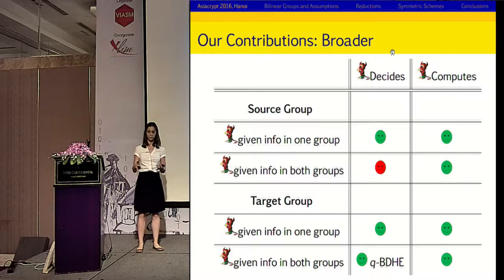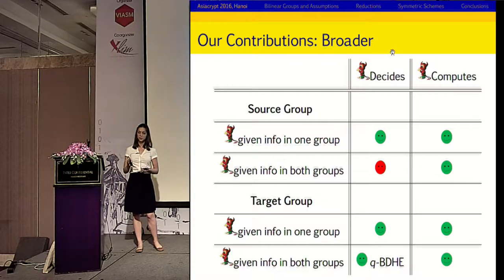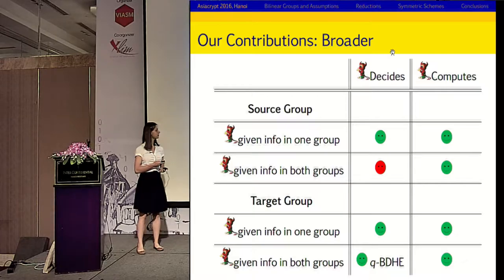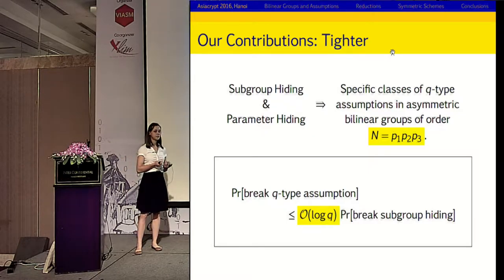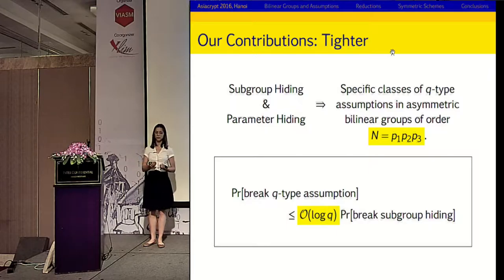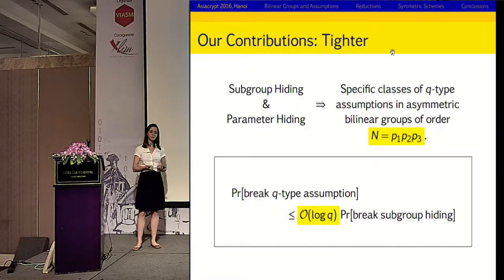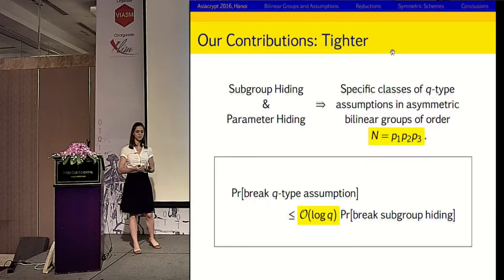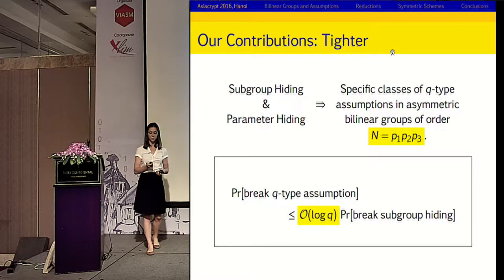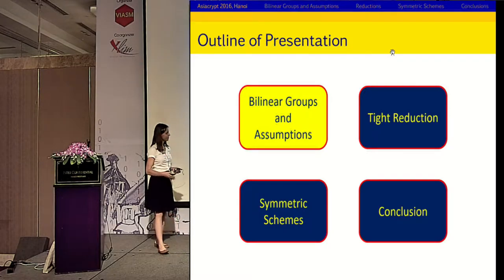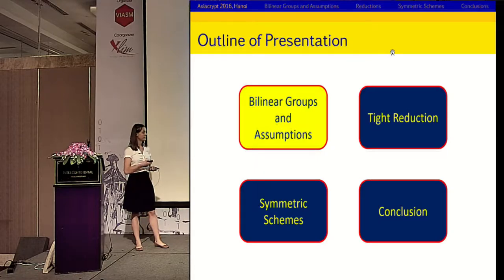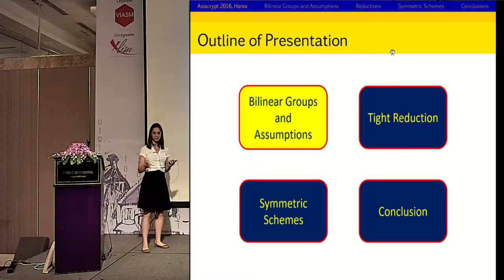We can cover, for example, the QBDHE assumption. We cannot cover all assumptions — we require there to be some input that the adversary is given which appears in the target group element it is challenged on, but about which the adversary doesn't have any extra information. We also manage to get a tighter upper bound. When we instantiate the Q-type assumptions in composite order groups with an extra subgroup, we can show that the probability an adversary breaks a Q-type assumption is less than order of log Q, rather than order of Q, times the probability the adversary breaks subgroup hiding. As far as we know, we are the first people to ever get any kind of tightness in this sort of setting.